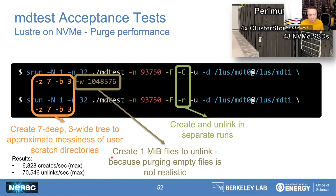Here are some real MDtest runs from our Perlmutter acceptance testing. We used MDtest to model the purge performance because purging our file system is very important to us. We first created a dataset of one-megabyte files using a complex directory structure, running only file creates, spreading the files over two remote directories. Then we ran a second MDtest that ran only file unlinks to delete all those files we created — deleting a large number of one-megabyte files — to figure out what our purge server can realistically expect the purge rate to be.